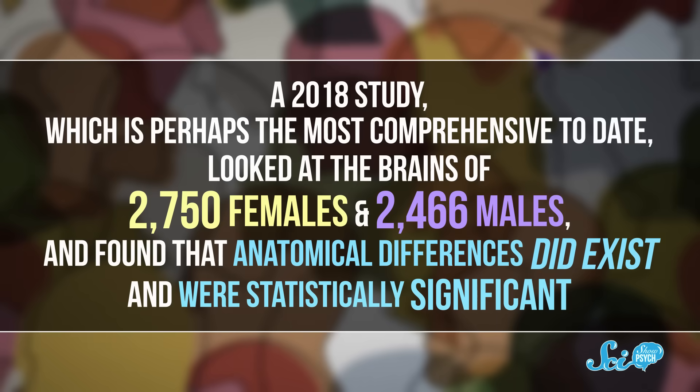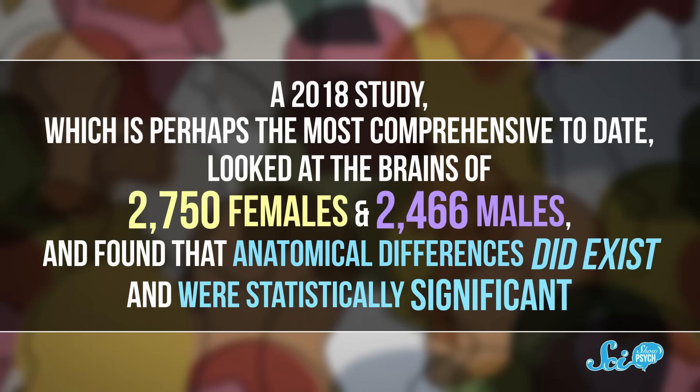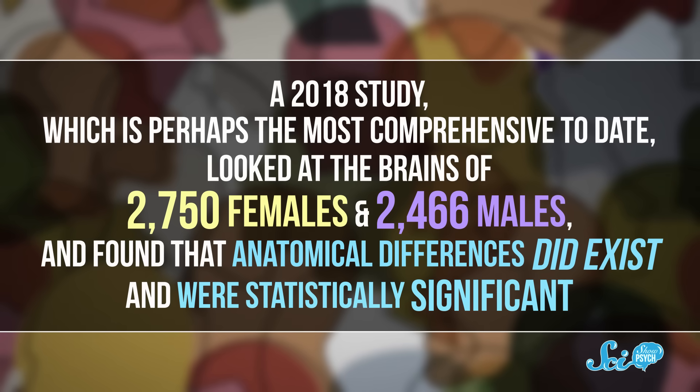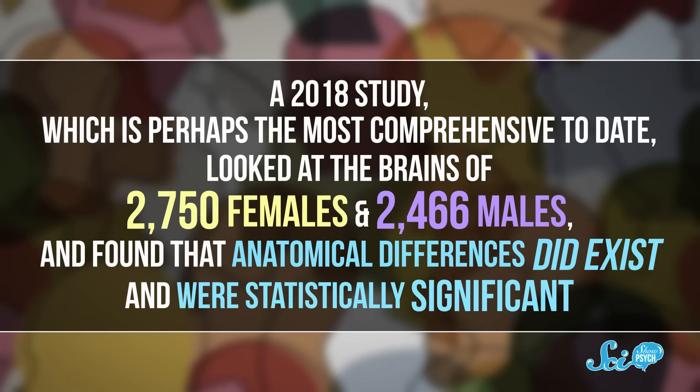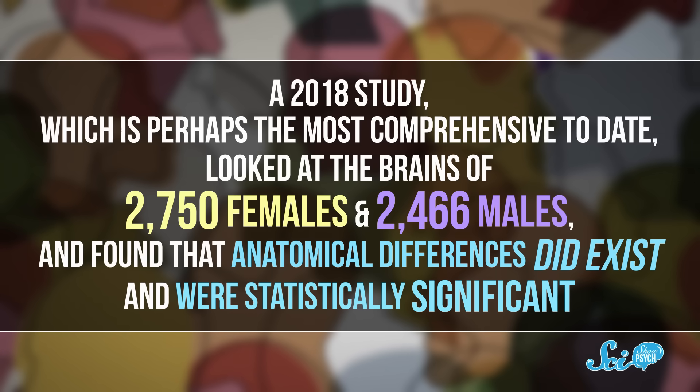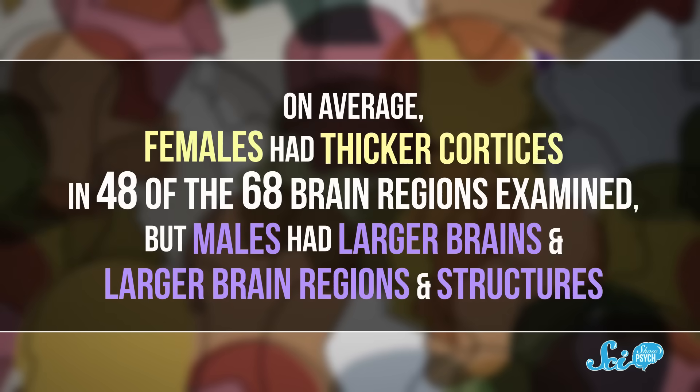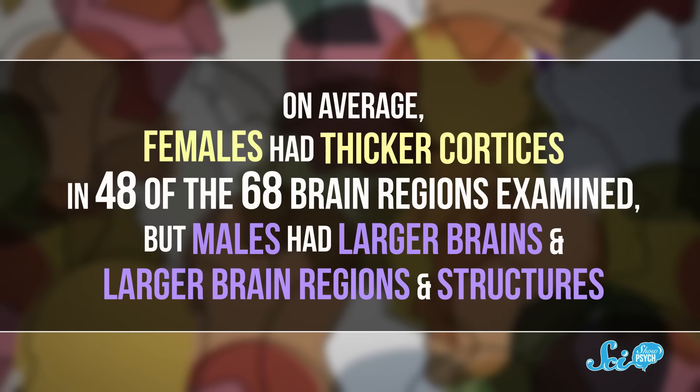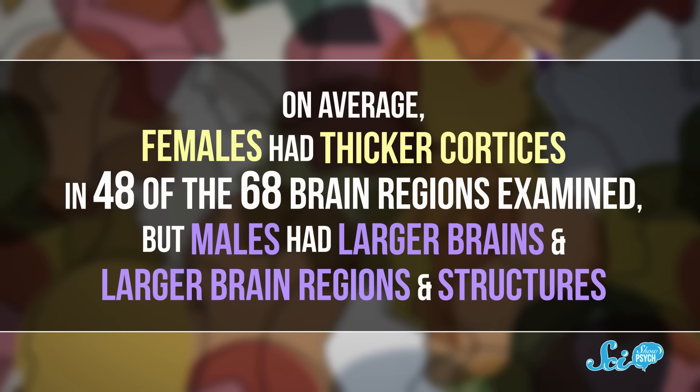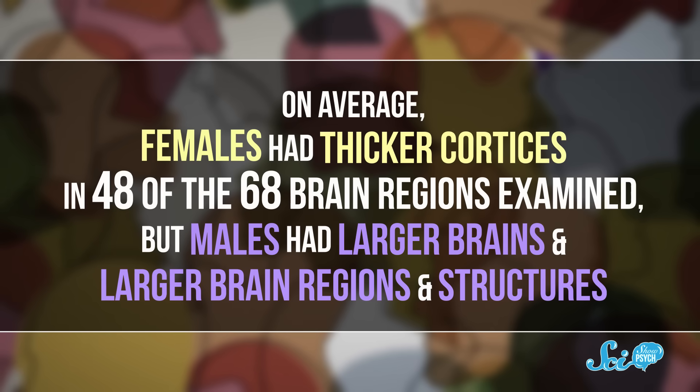For example, a 2018 study, which is perhaps the most comprehensive to date, looked at the brains of 2,750 females and 2,466 males, and found that anatomical differences did exist and were statistically significant. On average, females had thicker cortices in 48 of the 68 brain regions examined, but males had larger brains and larger brain regions and structures.